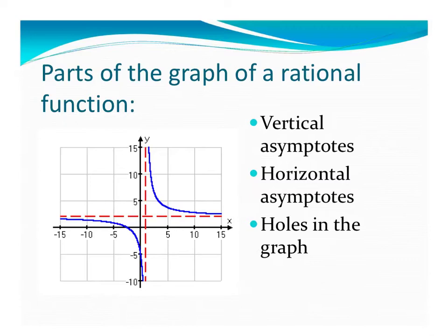Now asymptotes are basically invisible fences in a way, where your graph cannot cross. It will get really, really close, so this graph here will get really close to the asymptote, but it will never touch it, it will never cross it, kind of like an invisible dog fence. Your dog can get really close,